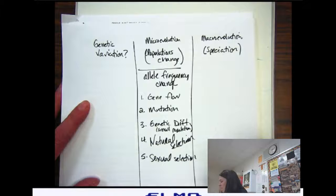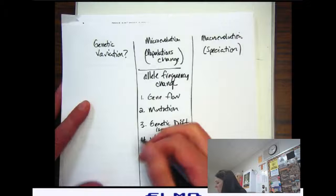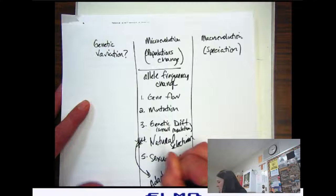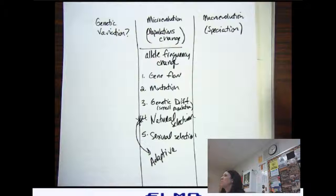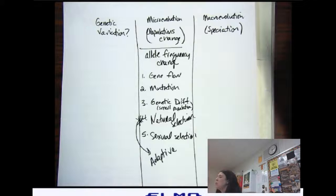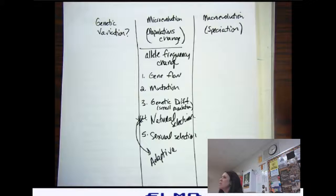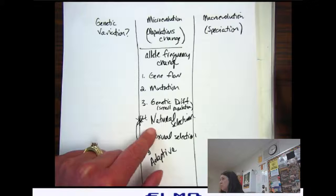There's natural selection, there's sexual selection. Natural selection is important because it's the only one that is adaptive. Adaptive meaning that it's the only one that helps the population survive in the environment that it's in. It's the only one that we know for sure is going to always be a good thing for that population is natural selection. The other ones could be good, could be bad. Natural selection always helps the population over time. It might not help the individual, but the population will be stronger.